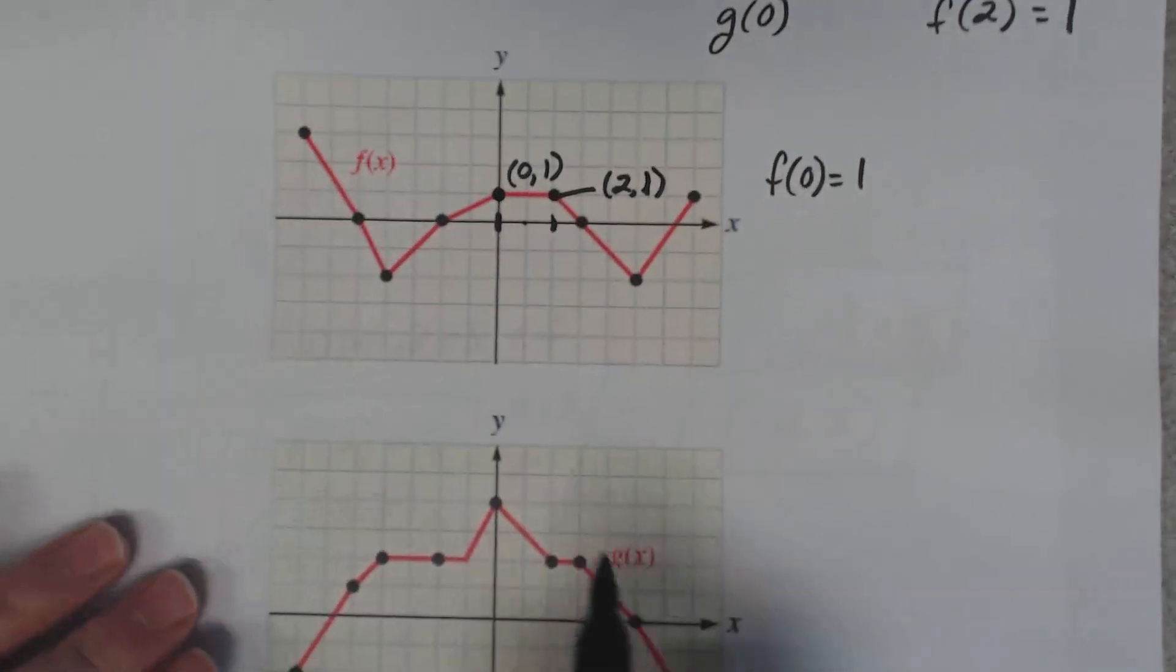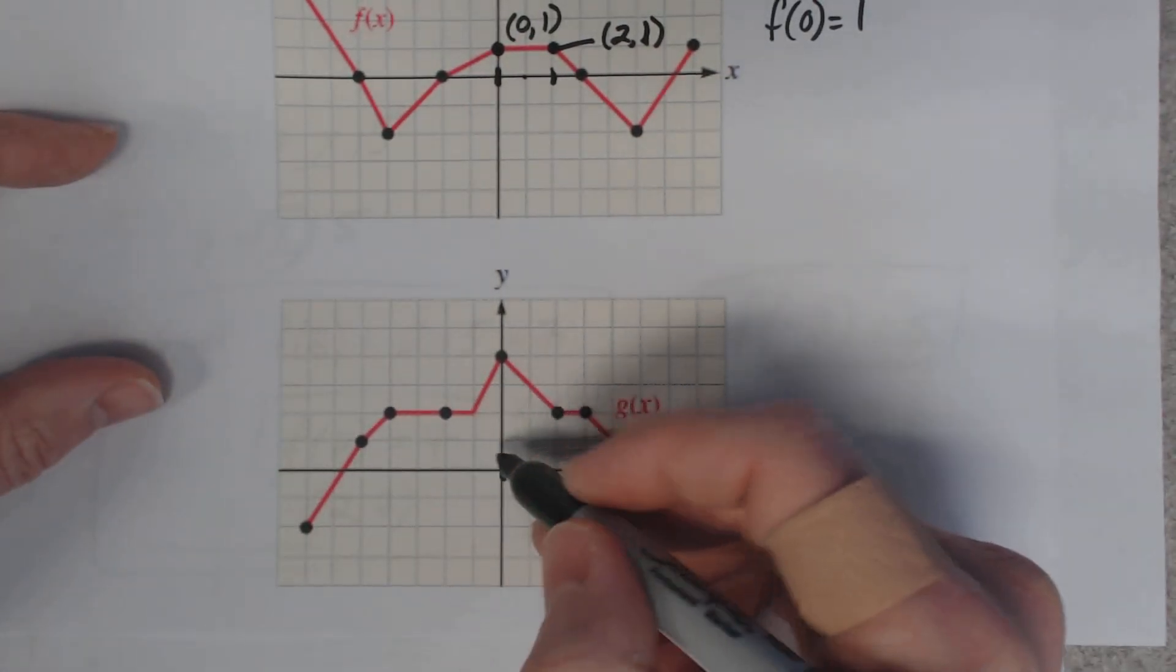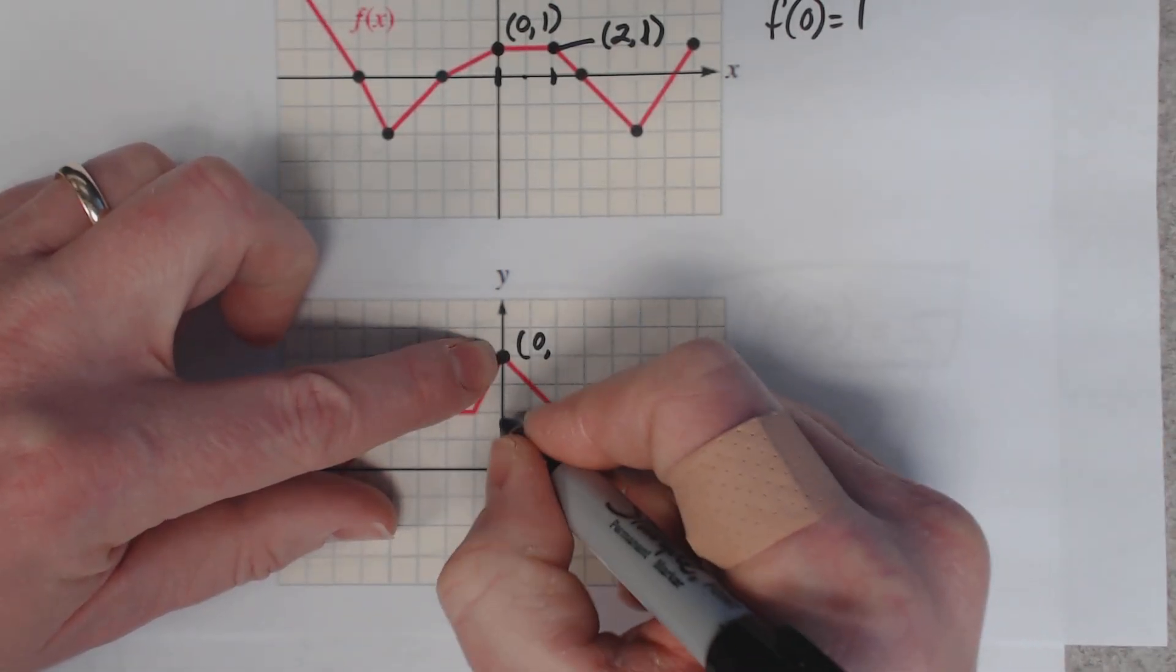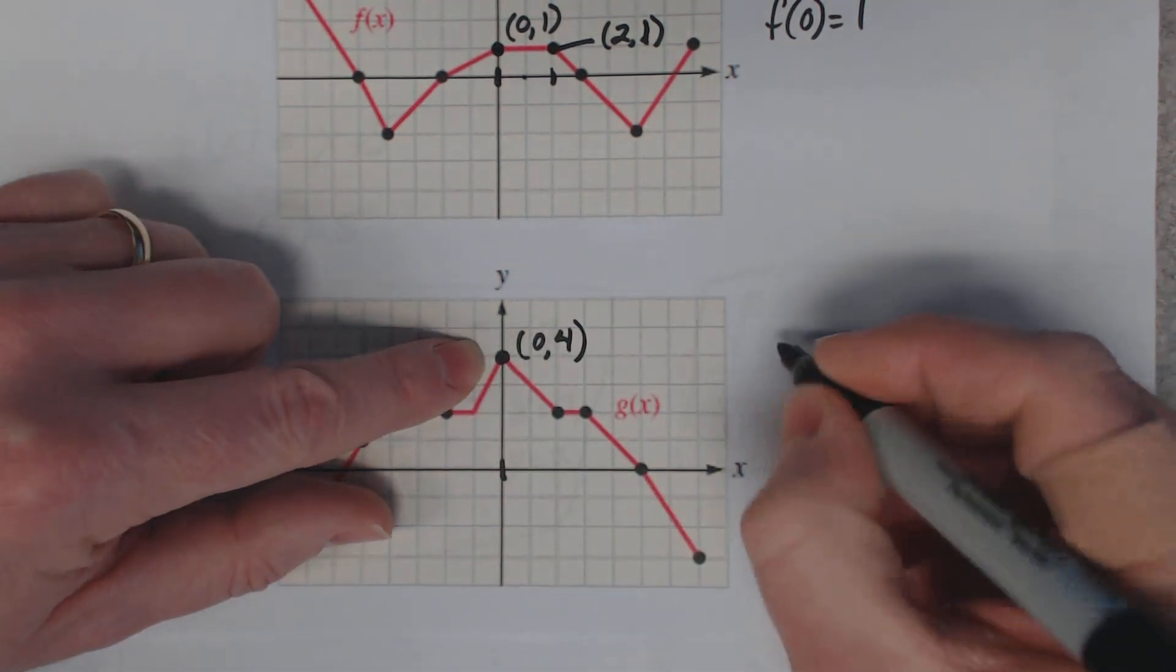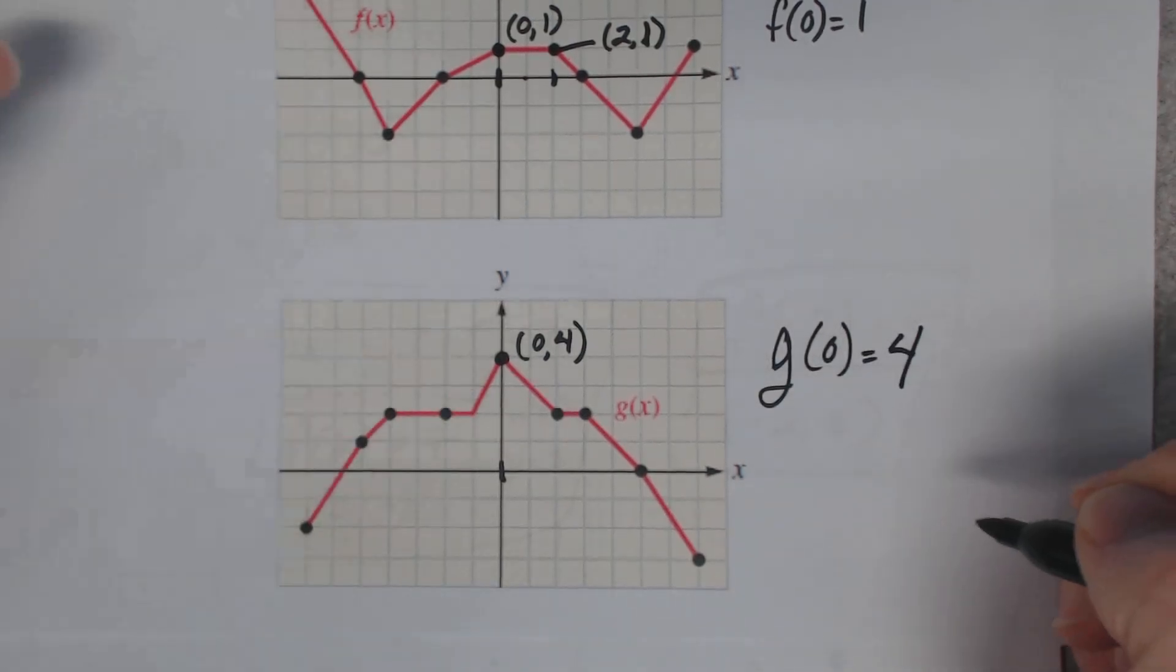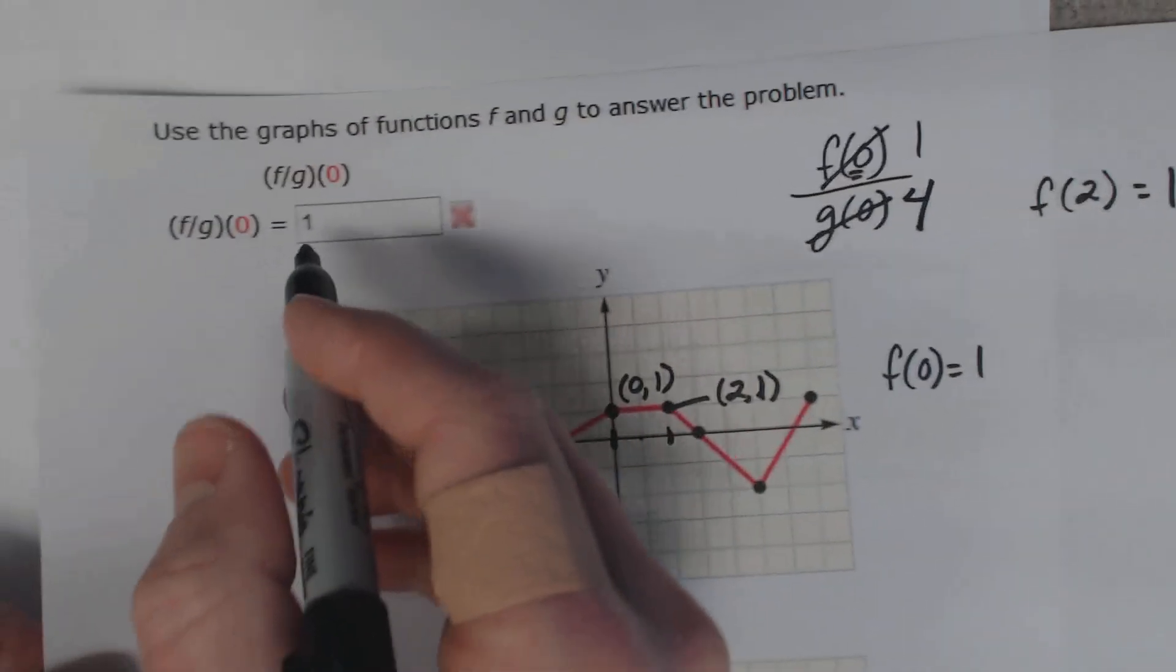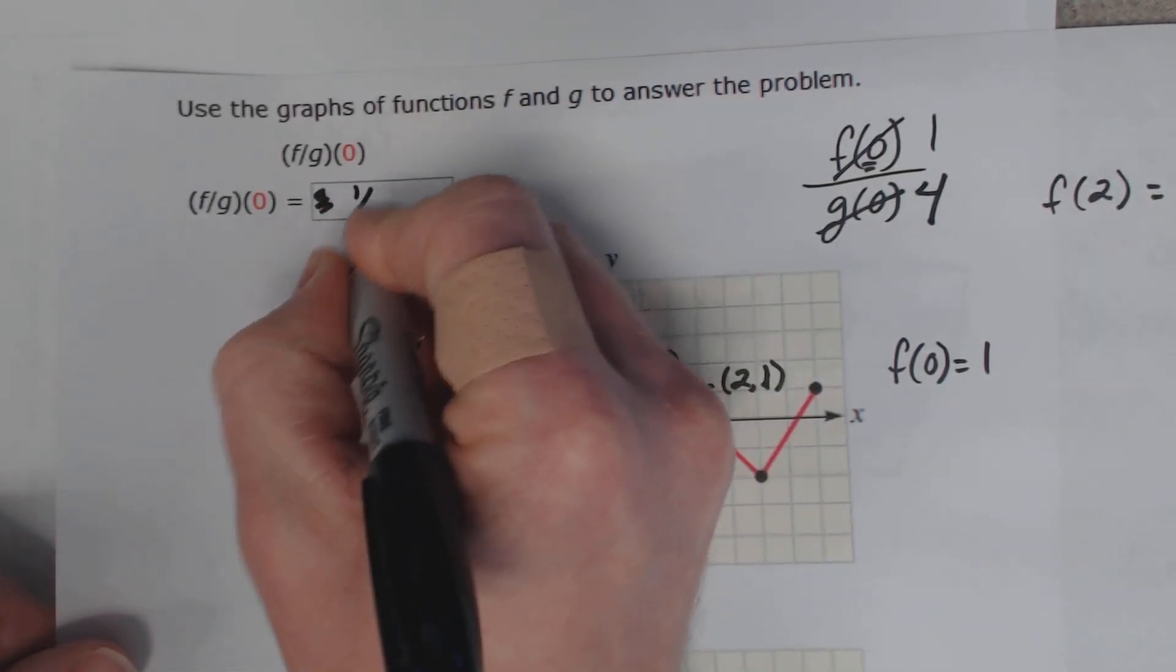What is g(0)? Well g(0), right here, here's your x value of 0. So the point that correlates to that would be this one. That point is 0, 1, 2, 3, 4. (0, 4). So g(0) = 4. So right here, I'm going to put a 4. So that means the overall answer would have been (f/g)(0) would be equal to 1/4.